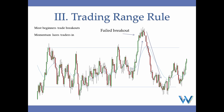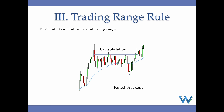Ninety percent of these breakouts will fail. Some will eventually work — there's no denying that — but you cannot try to find the one that will eventually work. There are clues in price action that will help you understand which breakouts will work and which will fail, such as bullish or bearish imbalance. Most breakouts will fail even in small trading ranges. This small consolidation is a trading range structure with a support and resistance — just indecision, no clear direction. Price broke to the downside strongly — a failed breakout — and price pulled back into the trading range.